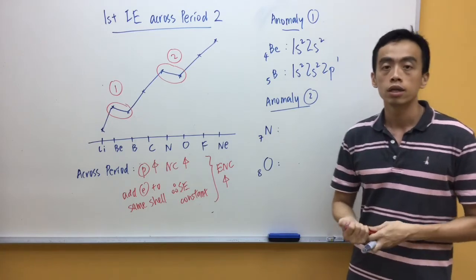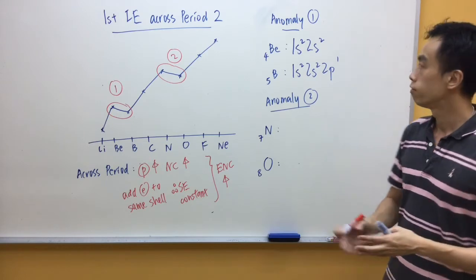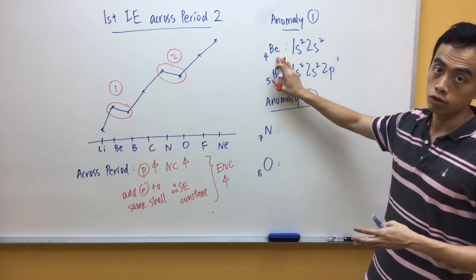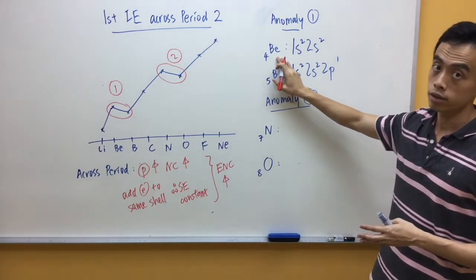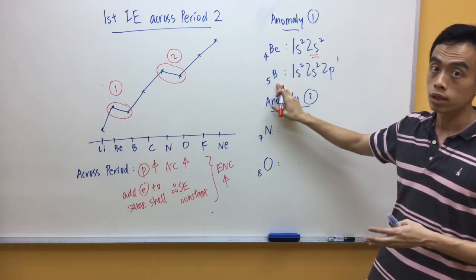So, if I consider the first ionization energy for each of my elements, for beryllium, I am removing the electron from my 2s subshell, for boron, I am removing the electron from my 2p subshell.